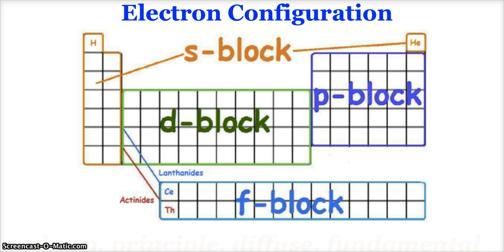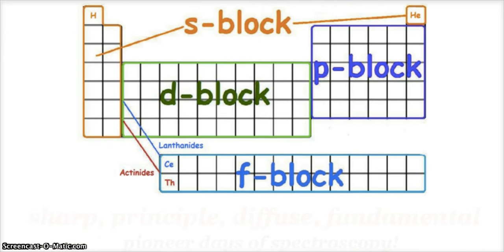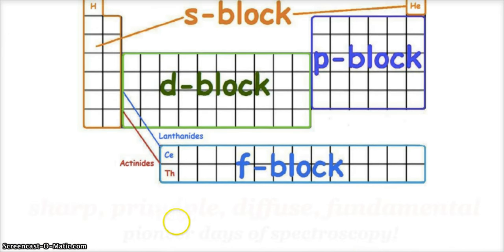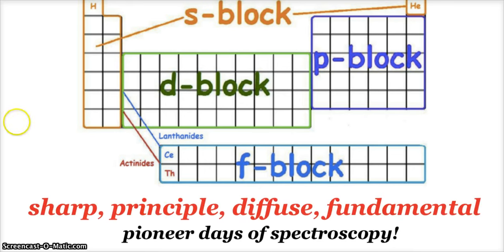When we're looking at the periodic table there are four main blocks: S, P, D, and F. Those match up with our four main types of orbitals. If you're a history buff, where do those letters come from? They come from sharp, principle, diffuse, and fundamental—pioneering days of spectroscopy.